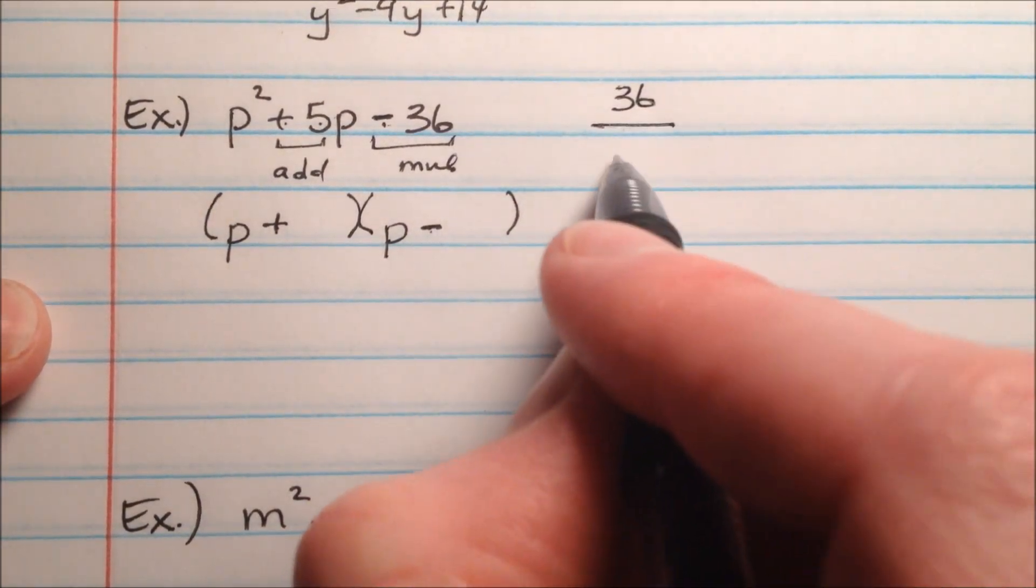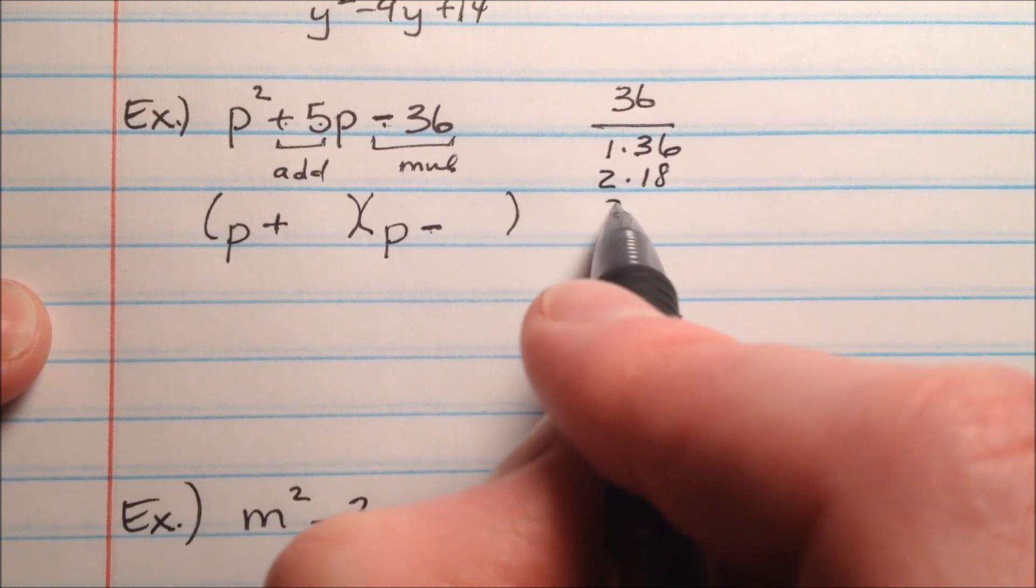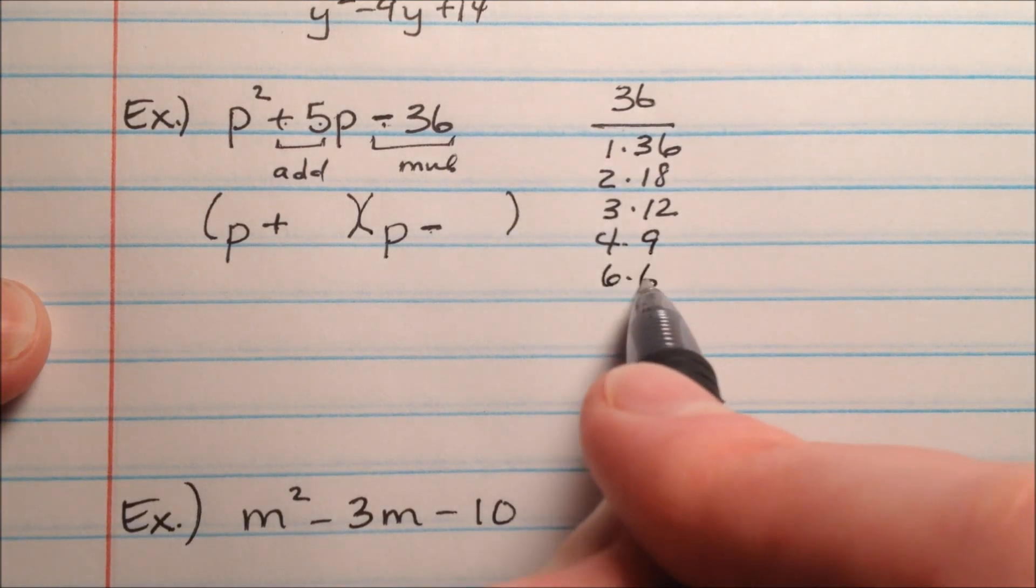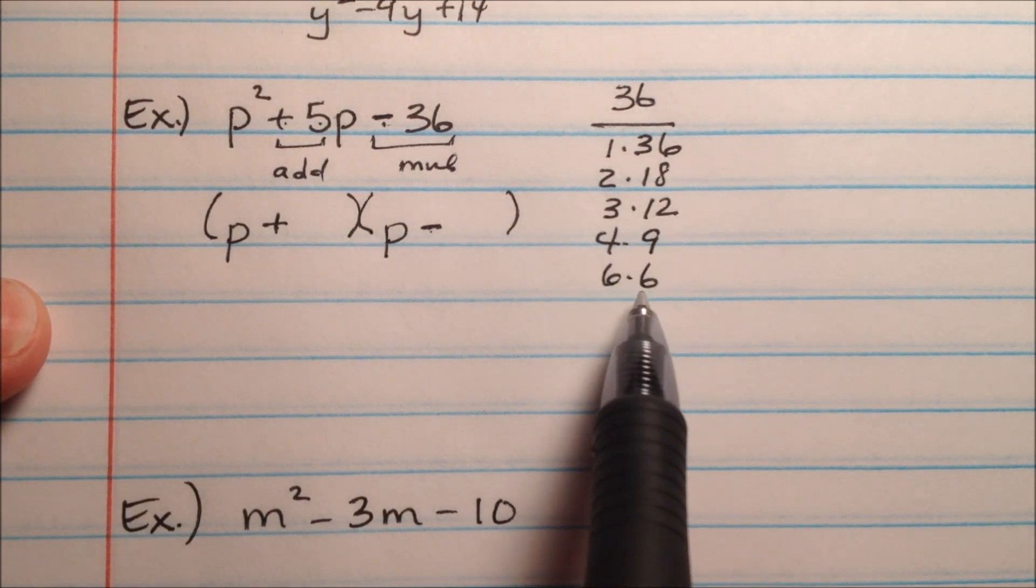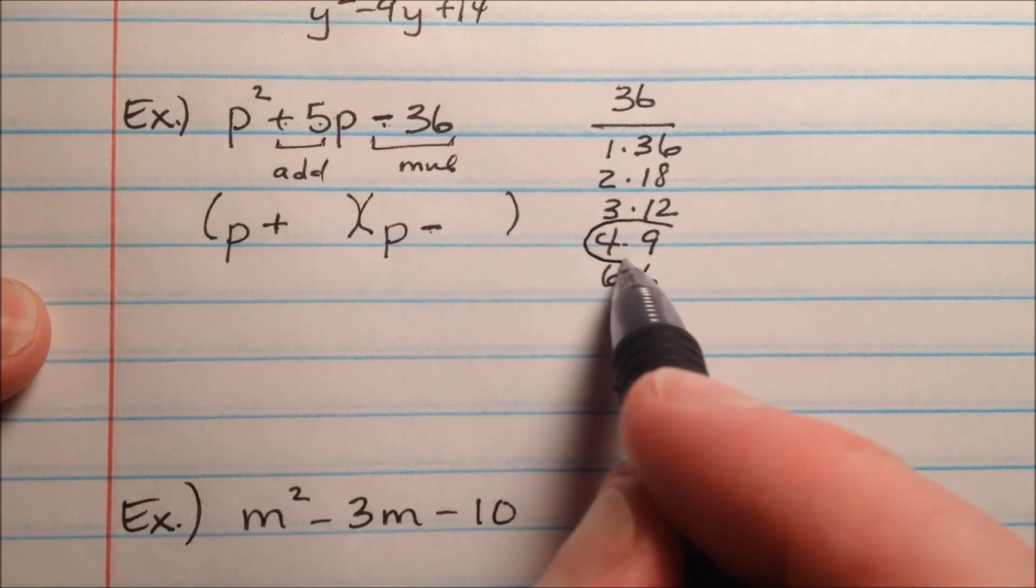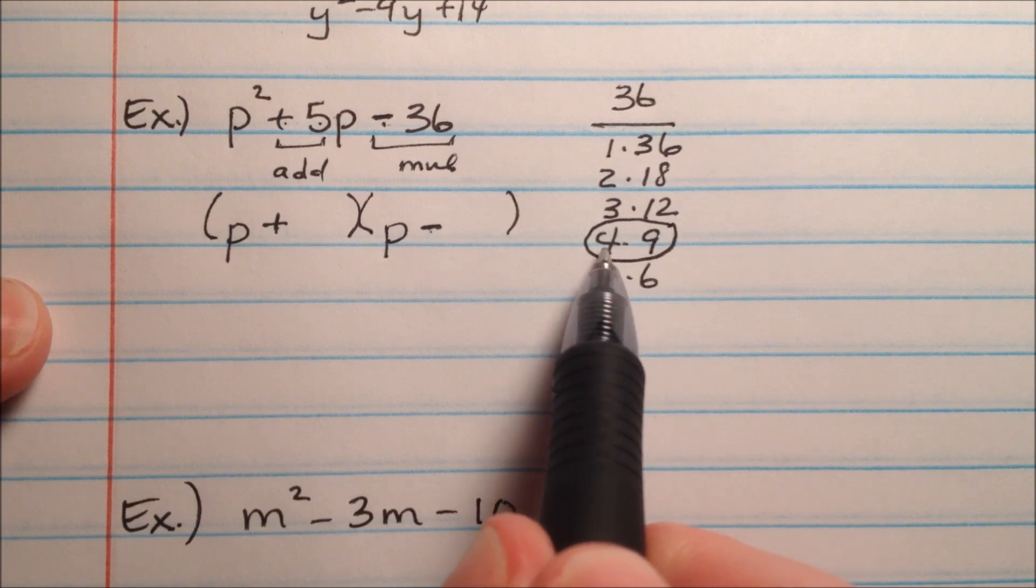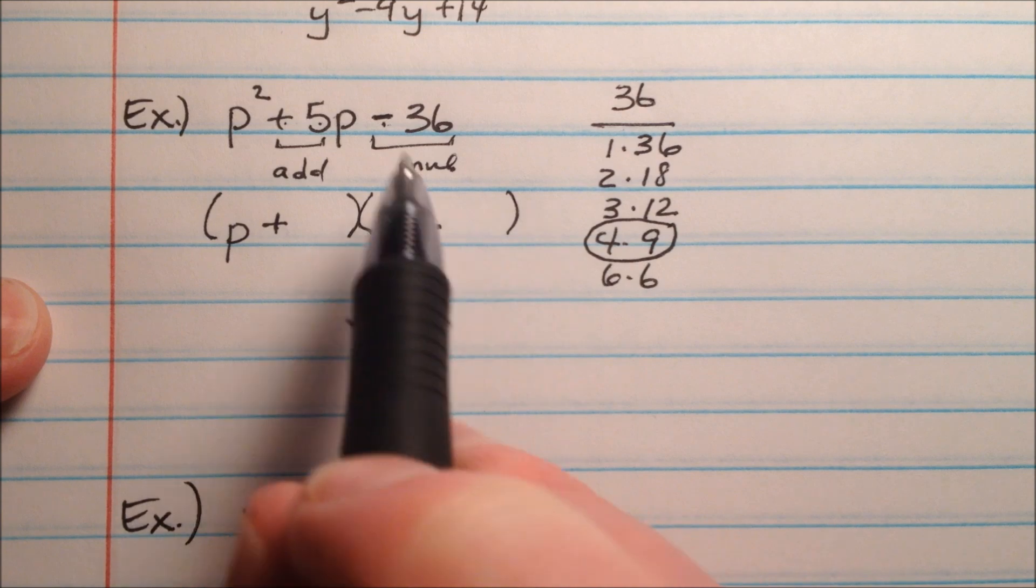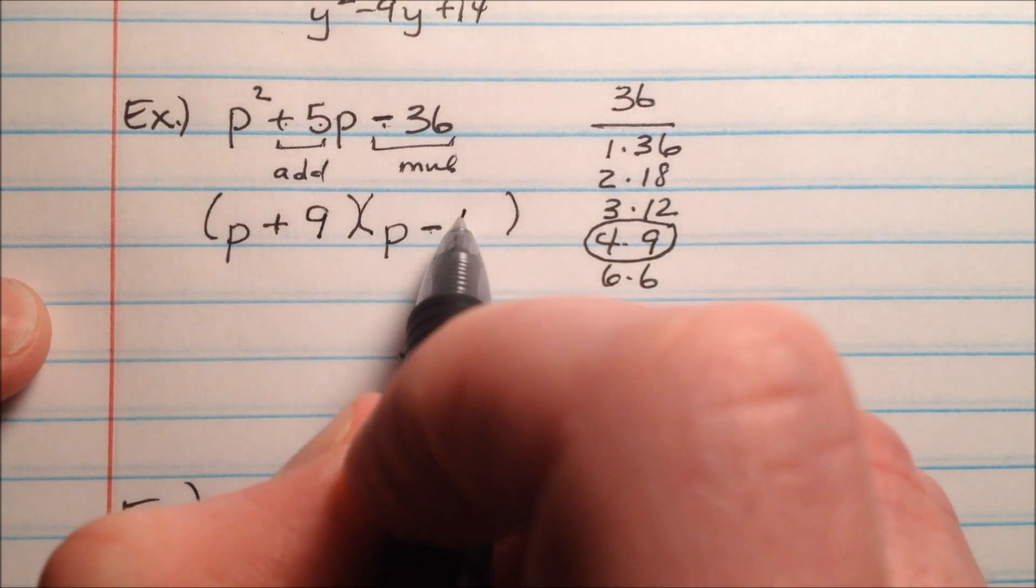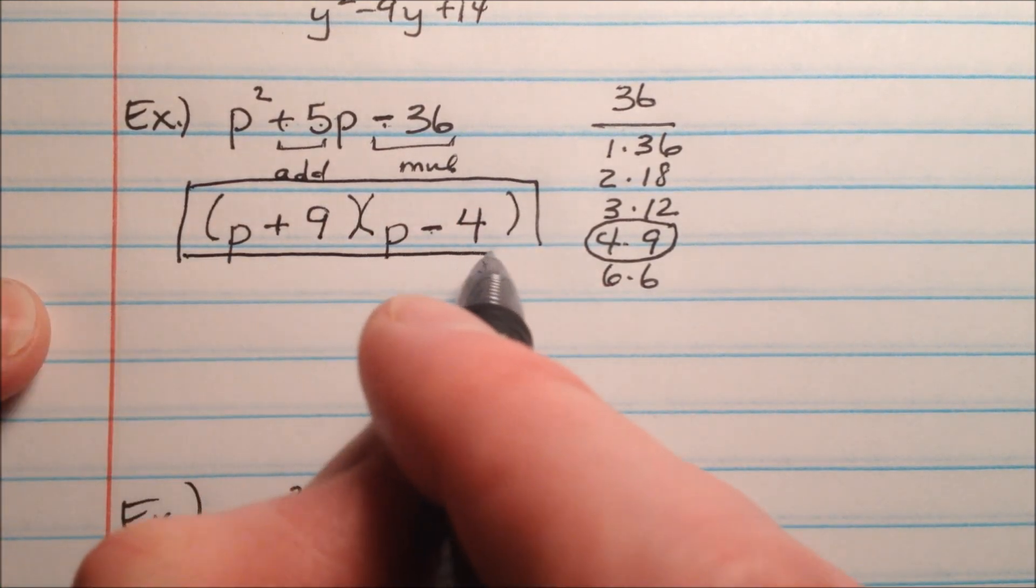Okay, so let's look at these factors here. 1 and 36, 2 and 18, 3 and 12, 4 and 9, 6 and 6. So which one of these, when you put them together, is going to make a positive 5? Well, it looks like 9 and 4, because if we have a positive 9 and a negative 4, they'll multiply to make negative 36 and they'll add to make a positive 5. So I'm going to put positive 9 and negative 4, and that will be my answer for this problem.